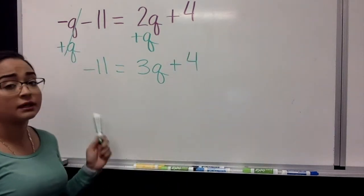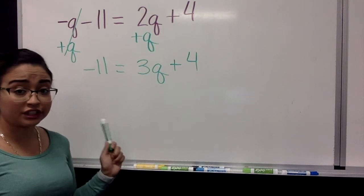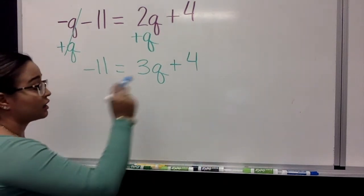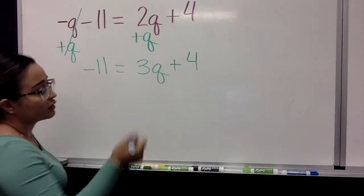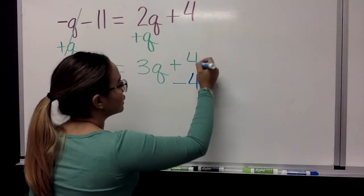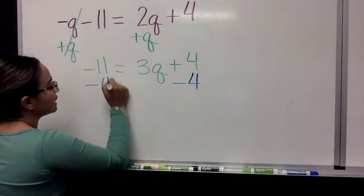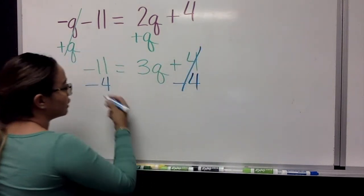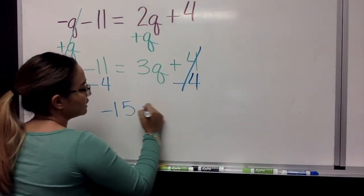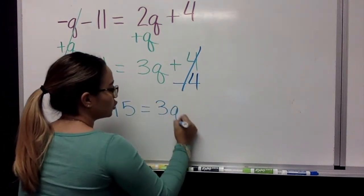Next up, this is a two-step equation. We're going in the right direction. So we are going to get rid of the 4 on this side and move it over here. What are we going to do? We're going to be subtracting 4 to both sides. So we get rid of the 4 over here. We are left with negative 15 equals 3Q.